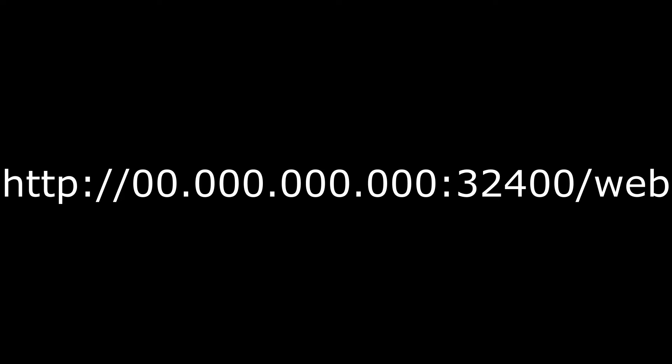After the last number in your public IP address, type colon 32400 backslash web into the address bar. The value 32400 in this address represents the default manual public port associated with Plex. If you've assigned a different public port within Plex media server, then you'll need to use that value in the URL instead. As an example, you should have entered something that looks like what you're currently seeing on the screen in this video.